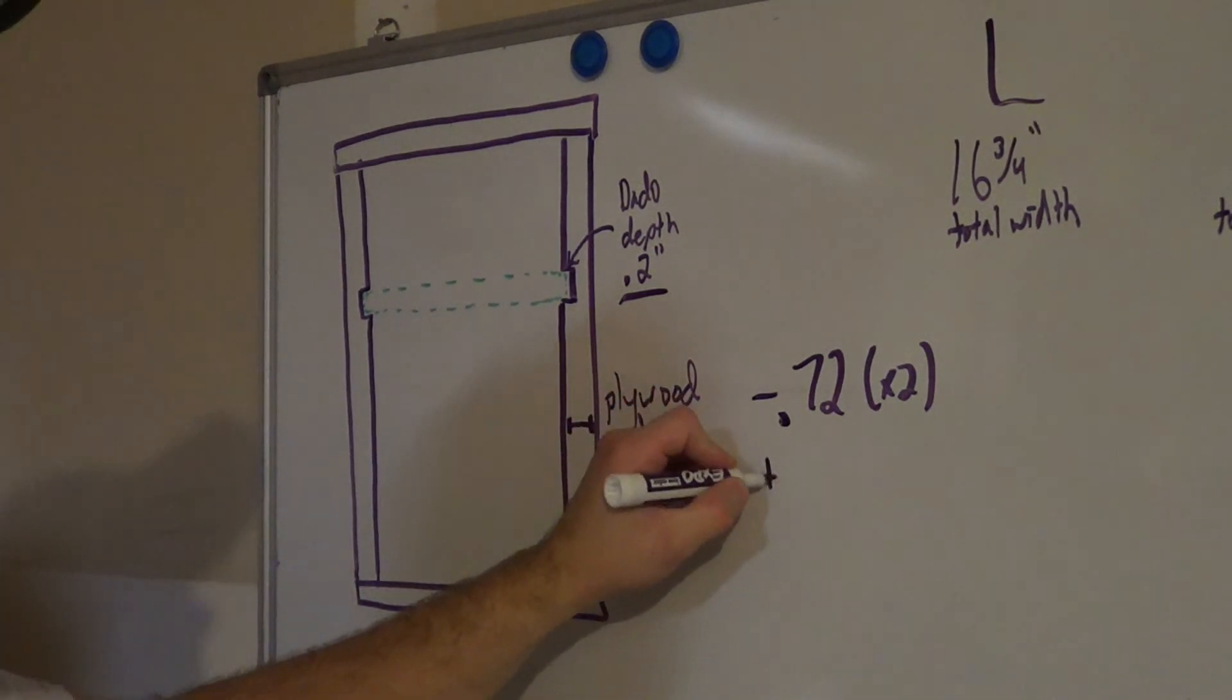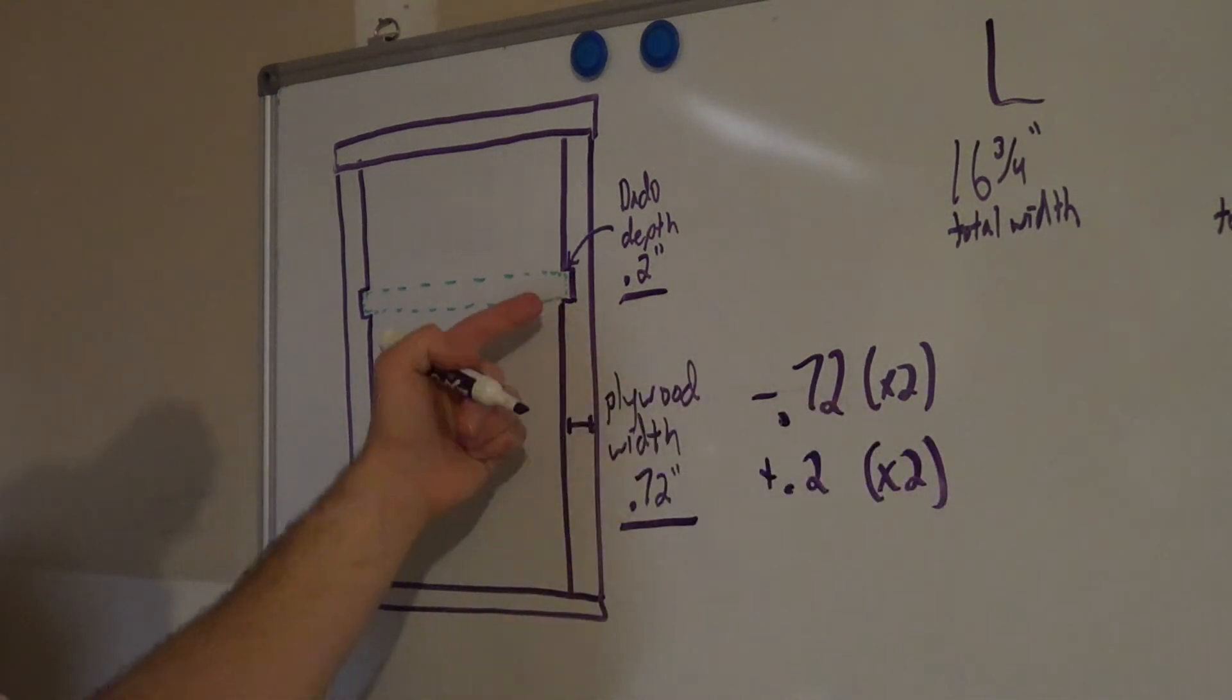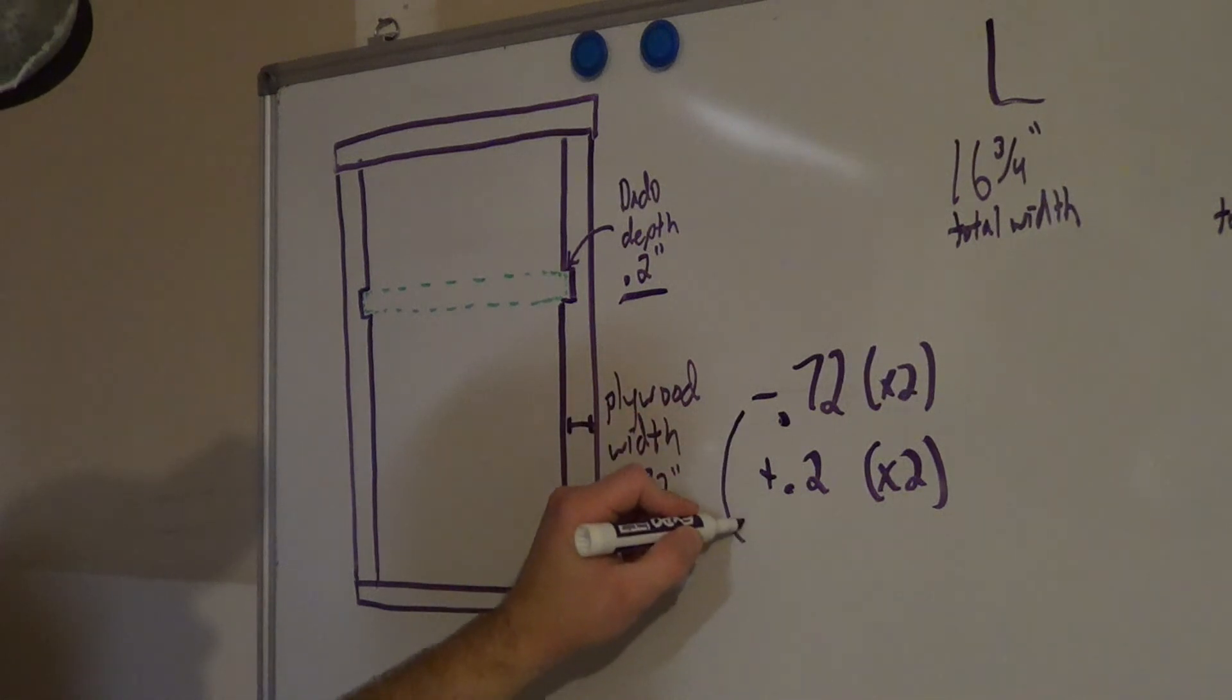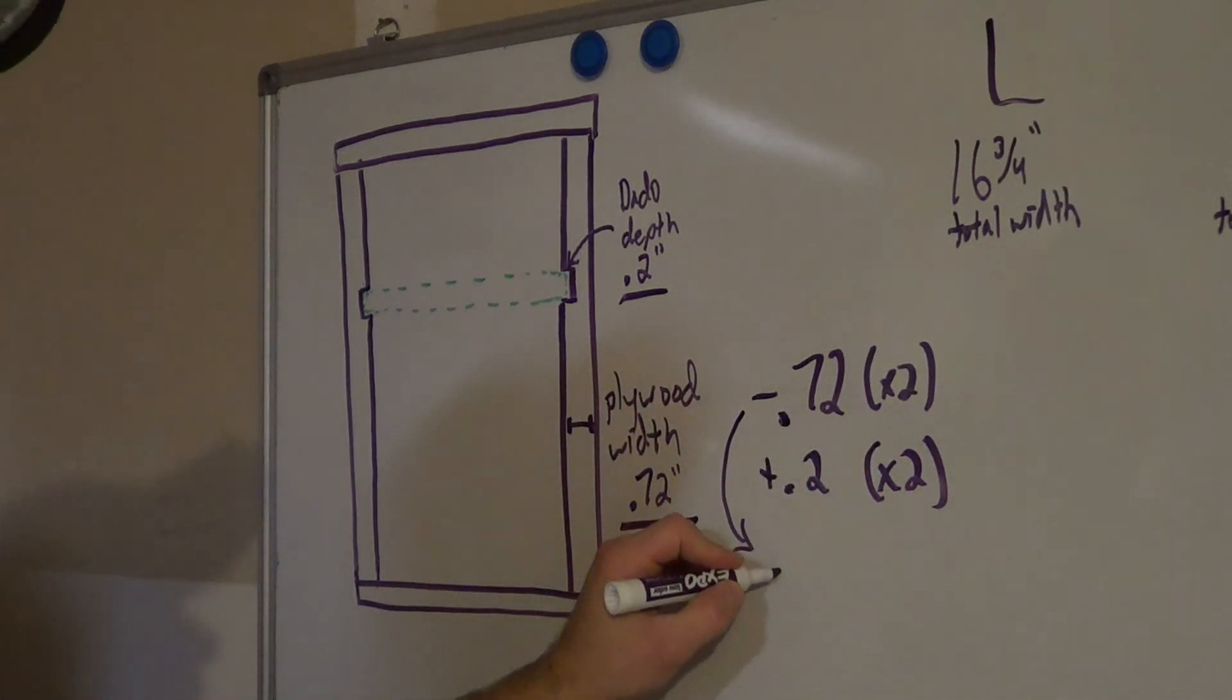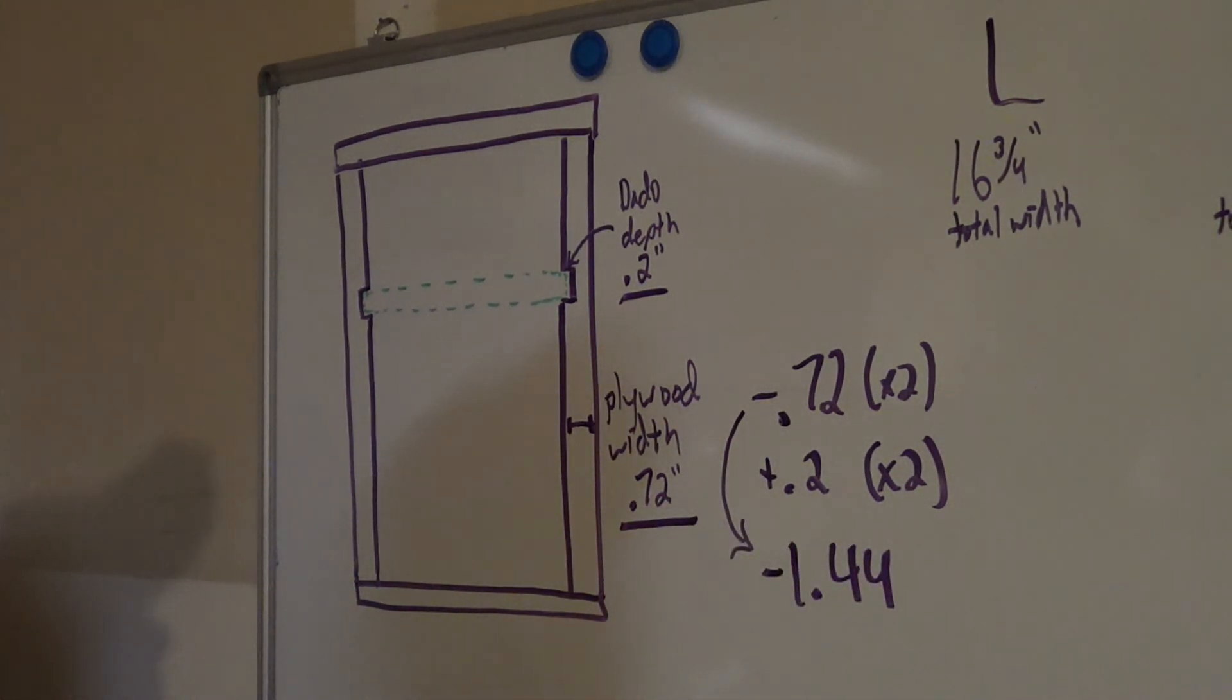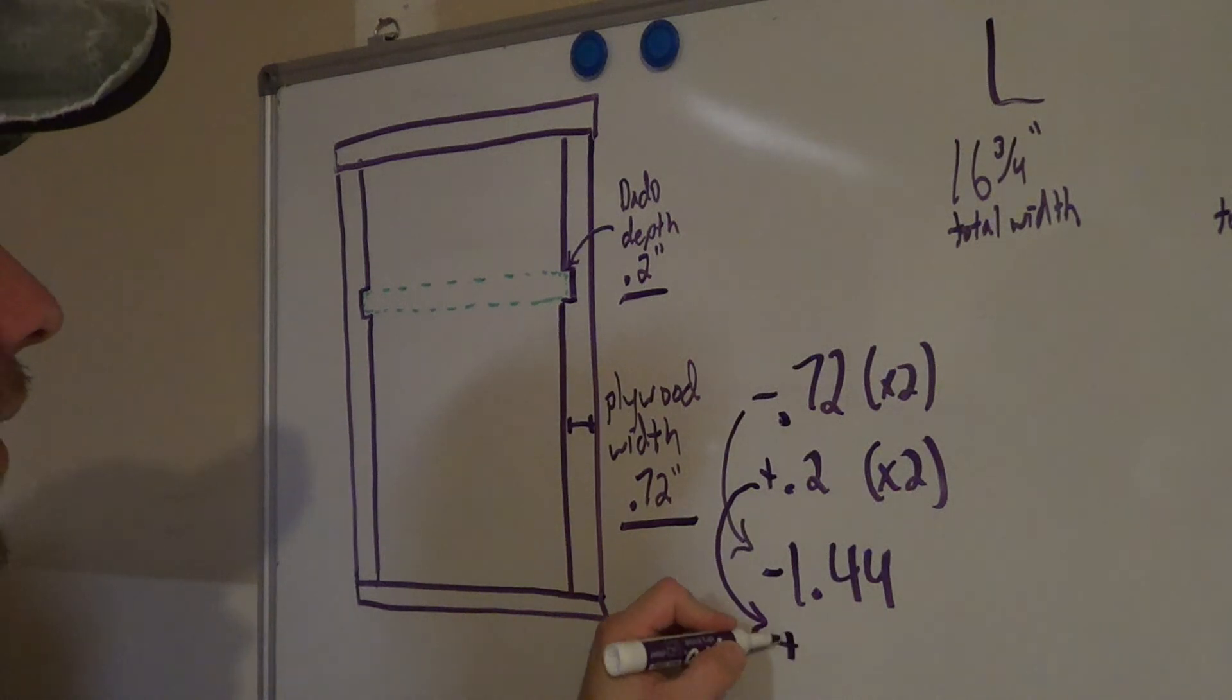And then, I need to add back that 0.2 from those dadoes. And I've got to do that twice because I've got it on the right side and the left side as well. Now, I'm going to put this into play. 0.72 times 2, that means I have to subtract 1.44 inches from the total width. Then, I need to add 0.2 times 2, so that's 0.4 inches.